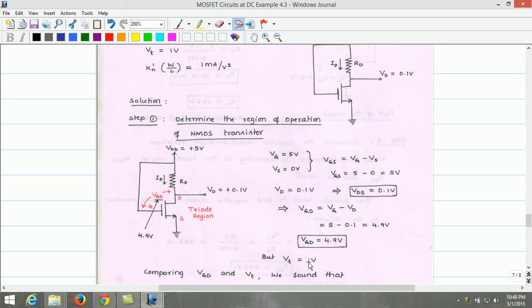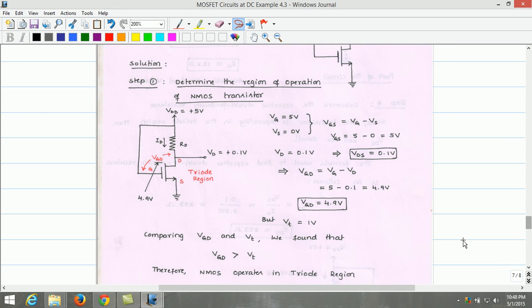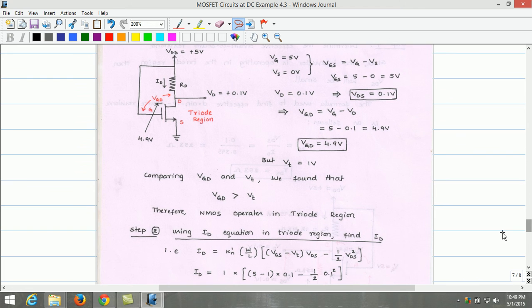But the threshold voltage of the transistor is given as 1 volt. Now, to determine the region of operation, we can compare VGD, gate-to-drain voltage, and threshold voltage of the MOSFET. So VGD is 4.9 volt, threshold voltage is 1 volt. VGD is greater than VT. Therefore, the transistor operates in triode region.